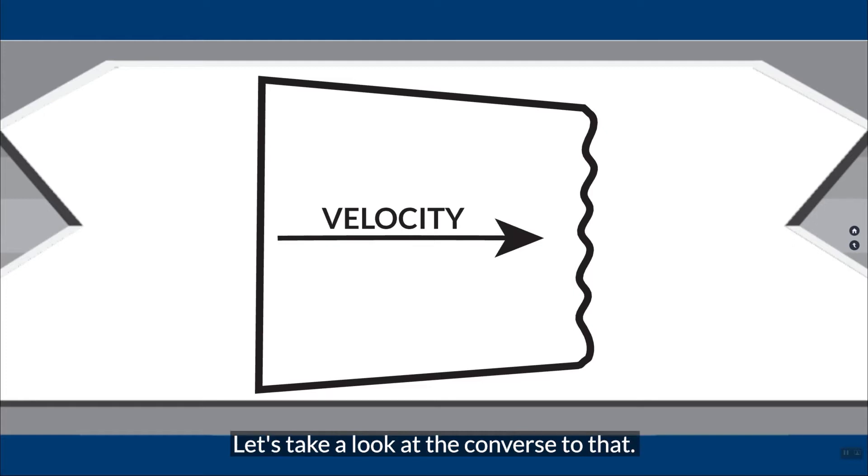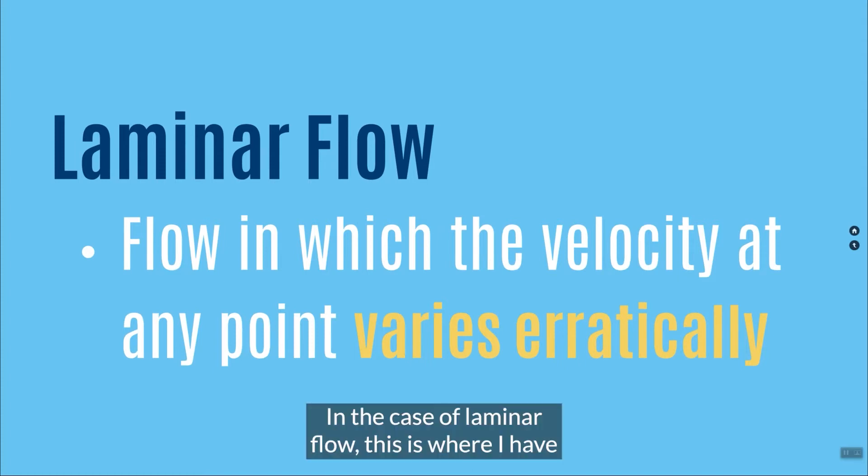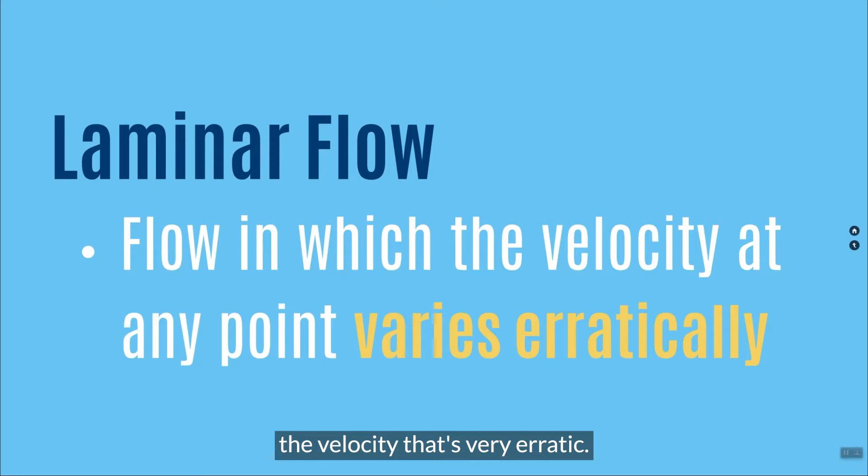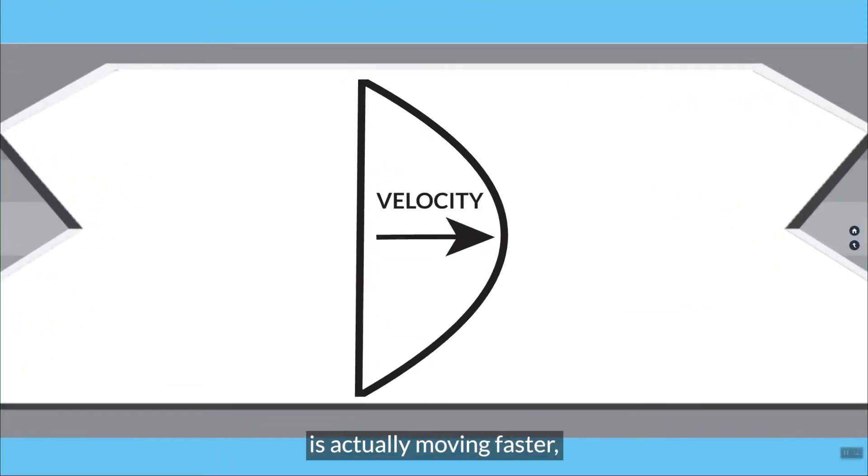Let's take a look at the converse to that. The converse to that is laminar flow. In the case of laminar flow, this is where I have the velocity that's very erratic. It's not the same across the pipe section. So it looks something like this. That velocity is skewed. In this case, what I'm showing here is that the center of the pipe is actually moving faster. The velocity is higher near the center than it is towards the top and towards the bottom. I've got this almost a hyperbole shape going on here.